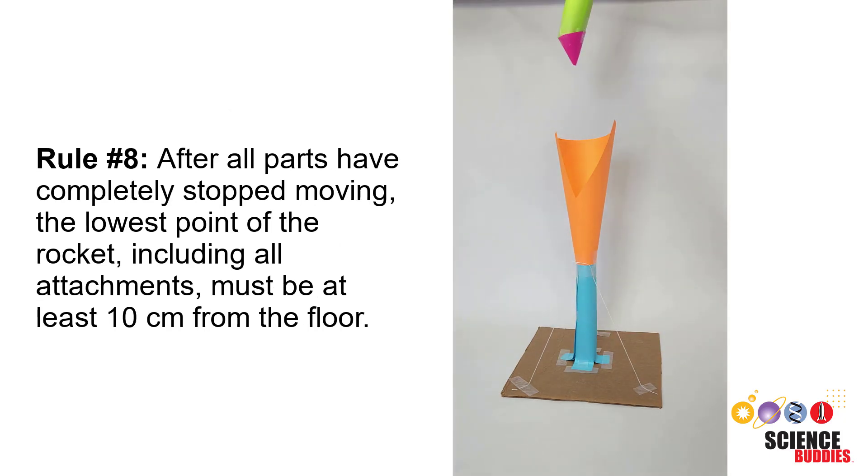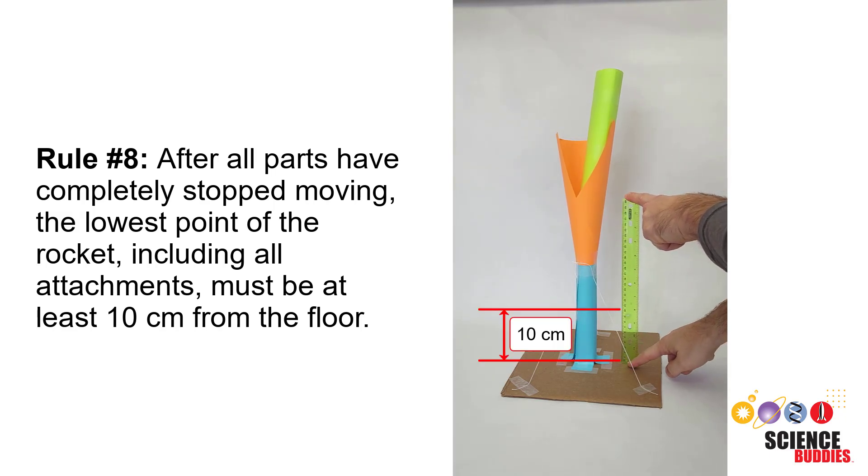Rule eight: After all parts have completely stopped moving, the lowest point of the rocket, including all attachments, must be at least 10 centimeters from the floor.